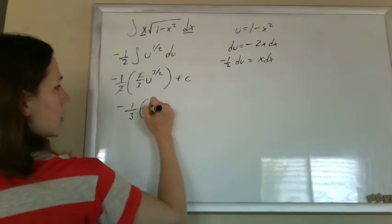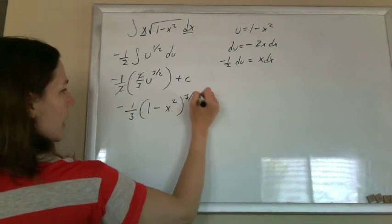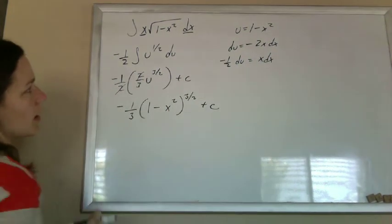Plug back in for u: 1 minus x squared to the three halves, plus a constant. And it's done.